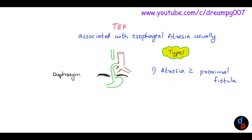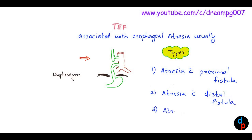The second type is esophageal atresia with distal fistula. The third type is esophageal atresia with fistula on both ends, that is the H-type. Of these types, the most common is the second one — atresia with distal fistula.